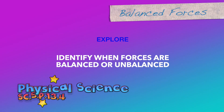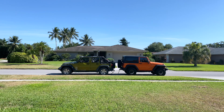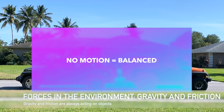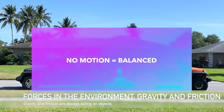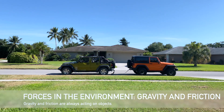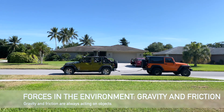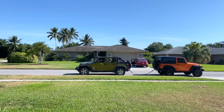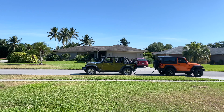Identify when forces are balanced or unbalanced. Now I've got two real jeeps back to back and you'll see that there's a strap between the two jeeps. Right now it's loose — the jeeps are just sitting there. We'll start moving one of the jeeps and the strap will tighten up. It's moving and the strap tightens up, and you can see that the green jeep jumped forward as the strap tightens up.